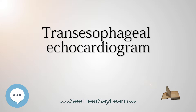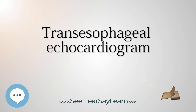In adults, several structures can be evaluated and imaged better with TEE, including the aorta, pulmonary artery, valves of the heart, both atria, atrial septum, left atrial appendage, and coronary arteries. TEE has a very high sensitivity for locating a blood clot inside the left atrium.